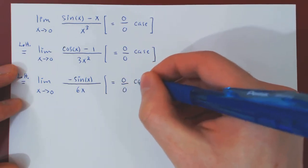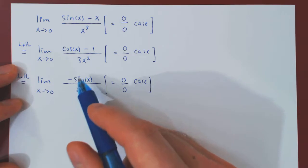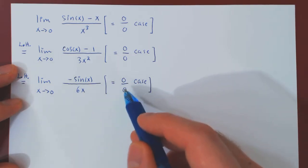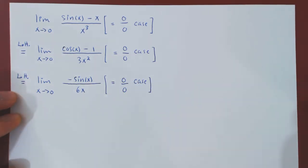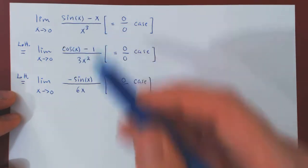So once again, we have an indeterminate case. We have the ratio of two functions, and they are both shrinking to 0. So we still don't know what the original limit is equal to.